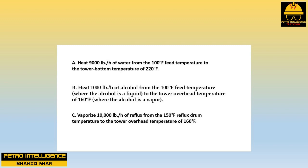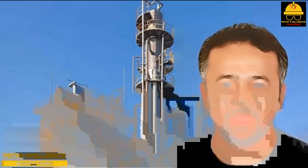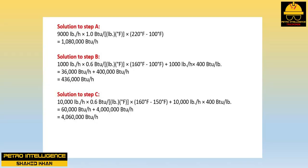Step B: heat 1,000 lb/hr of alcohol from the 100°F feed temperature (where the alcohol is a liquid) to the tower overhead temperature of 160°F (where the alcohol is a vapor). Step C: vaporize 10,000 lb/hr of reflux from the 150°F reflux drum temperature to the tower overhead temperature of 160°F. Solution to Step A: 9,000 lb/hr × 1.0 BTU/lb·°F × (220 − 100)°F = 1,080,000 BTU/hr.